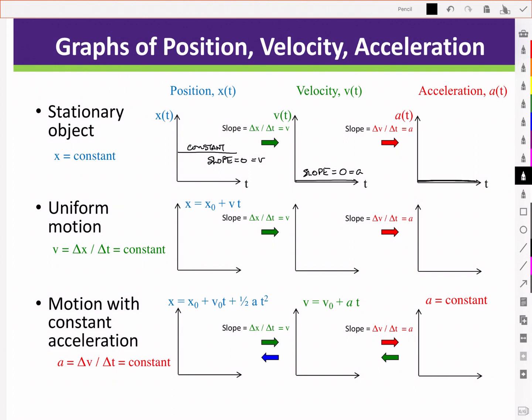Next we have uniform motion. By definition, an object moving uniformly means it has a uniform or unchanging velocity. Thus its position is changing linearly in the positive direction, for this example with a positive constant velocity. Notice that the slope of the position time graph is given by delta x over delta t, which we should recognize from the definition of velocity.